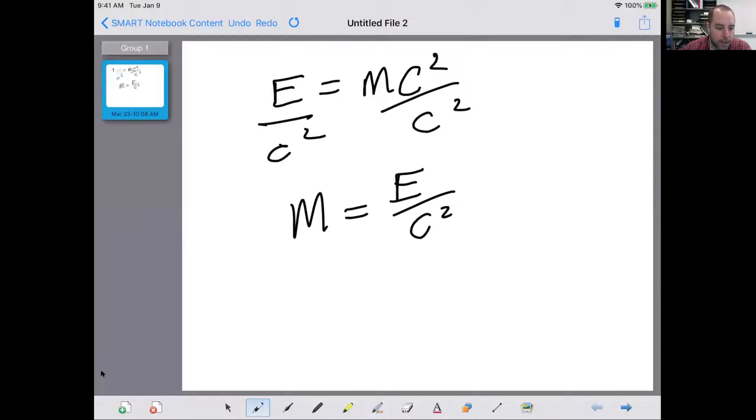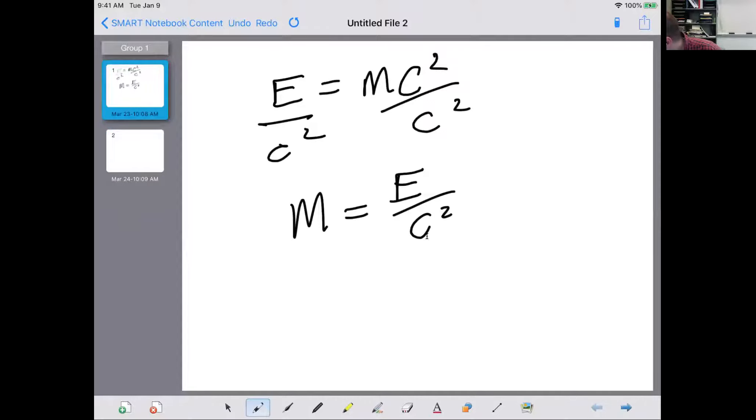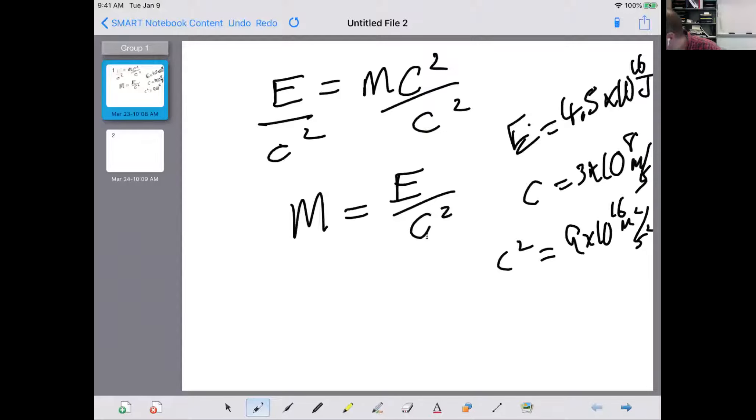So if you go back to the question, the energy is 4.5 times 10 to the 16 joules. E equals 4.5 times 10 to the 16 joules. C squared, we know C is 3 times 10 to the 8 meters per second. C squared is that squared. Three squared is nine. Double the 8 is 16. Nine times 10 to the 16 meters squared per second squared. You're welcome to use a calculator if you need to. Just dividing those two numbers now.